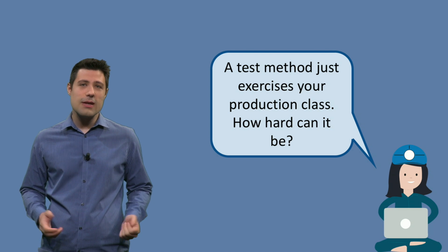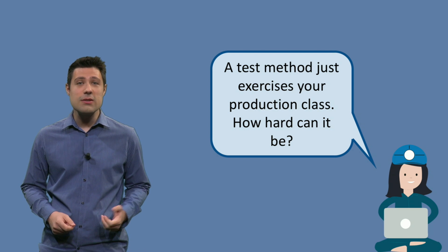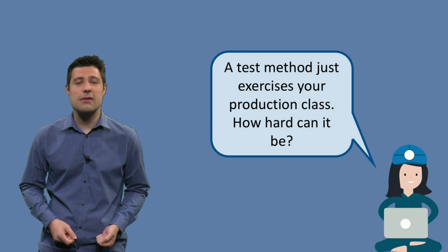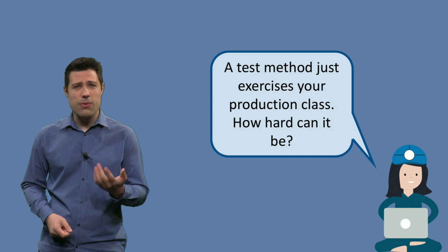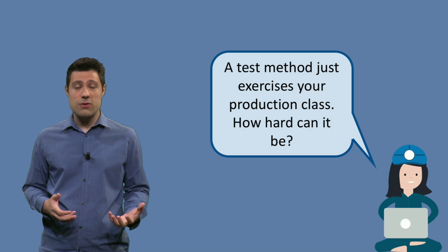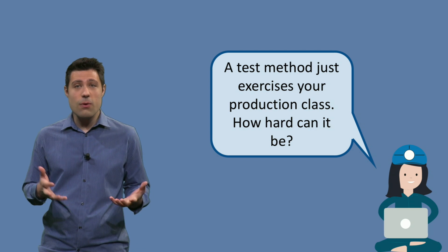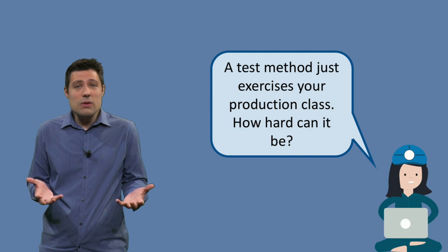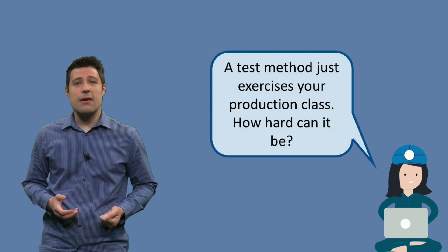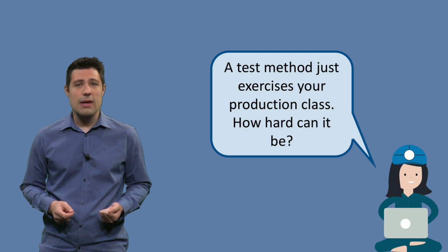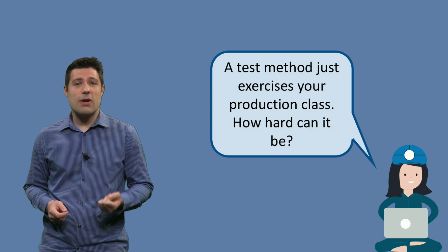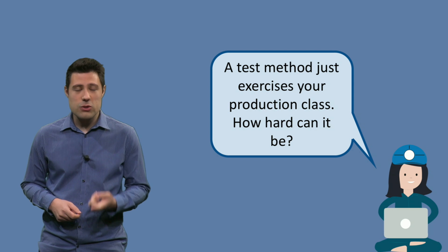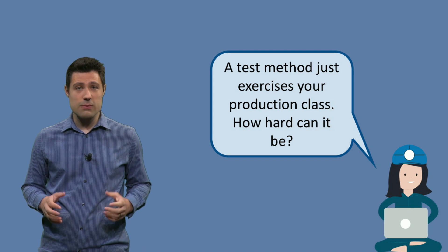Testable code means code that is easy to be tested, or easy for us to write an automated test for. A test method is just a method that creates a class, invokes a method, and checks its outputs. If you cannot do this easily, then you probably have untestable code. This means you have to think about applying everything we have been discussing so far. Let's get to some final tips on testability.